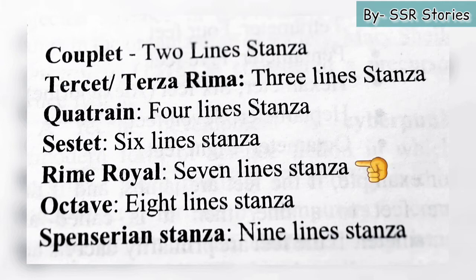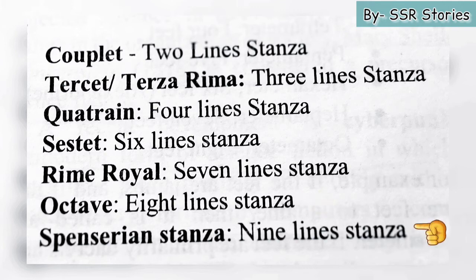Then there is rhyme royal, which means a seven-line stanza. Then there is octave, which means an eight-line stanza. And then there is the Spenserian stanza, which holds nine lines. Thank you so much.